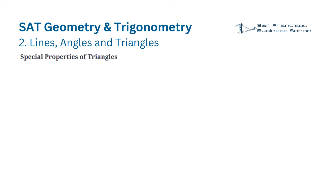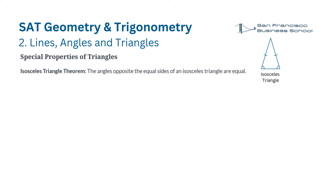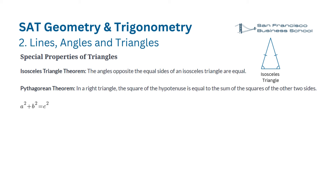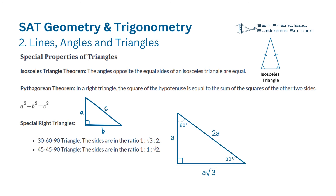Special properties of triangles. Isosceles triangle theorem: the angles opposite the equal sides of an isosceles triangle are equal. Pythagorean theorem: in a right triangle, the square of the hypotenuse equals the sum of the squares of the other two sides — a squared plus b squared equals c squared. Special right triangles: 30-60-90 triangle sides are in the ratio 1, √3, and 2. 45-45-90 triangle sides are in the ratio 1, 1, and √2.